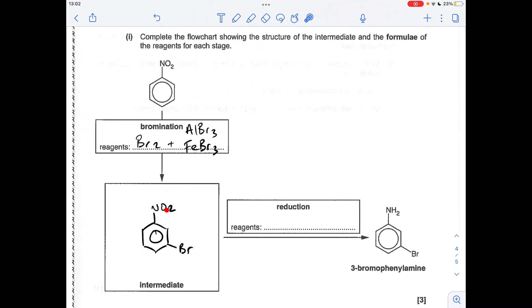And then how do we reduce the nitro group to the amino group? We react it with a mixture of tin and concentrated hydrochloric acid.